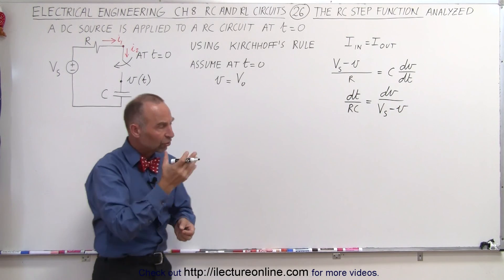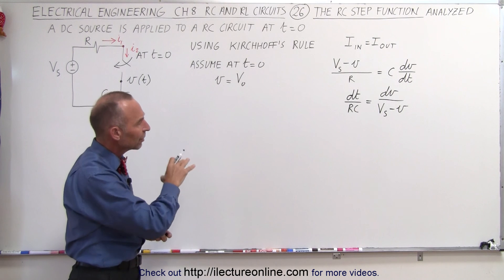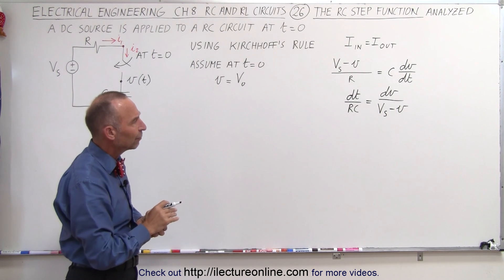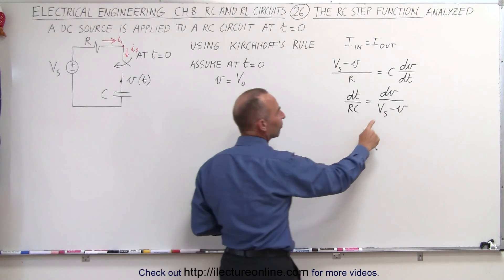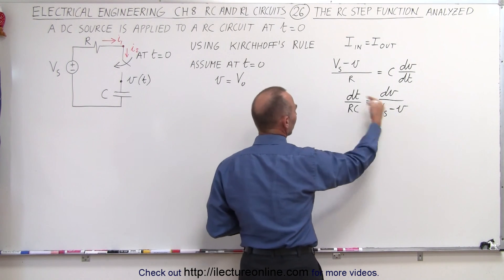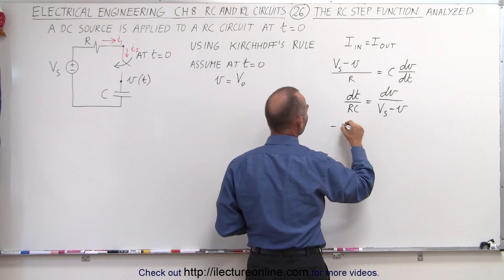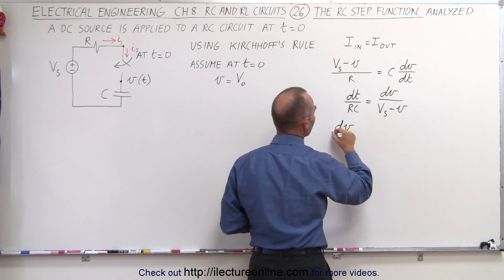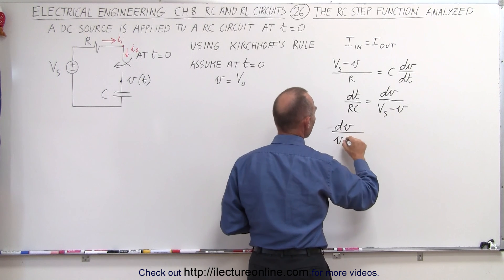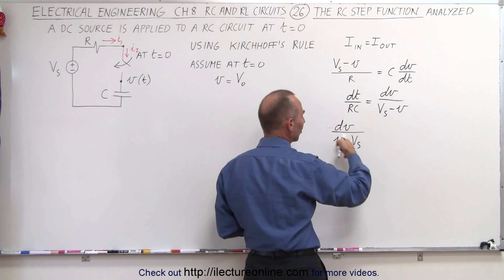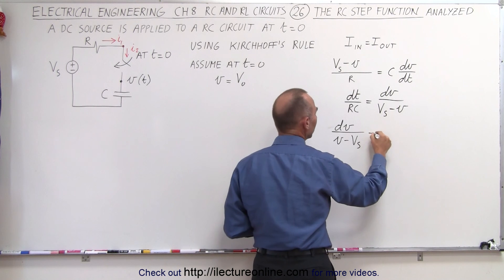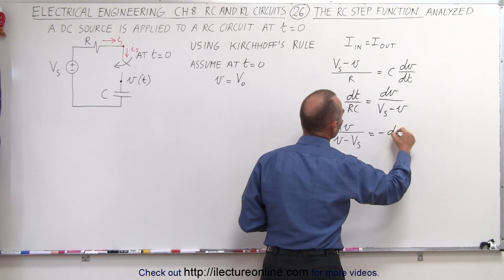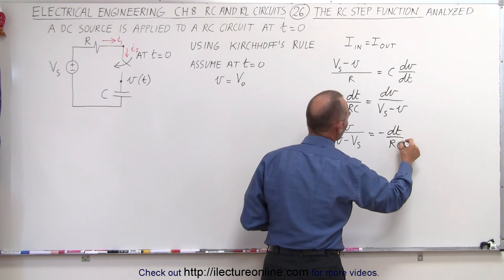Now we're going to switch the equation around — we want dV on the left side, and we're going to multiply both sides by negative one because we want to write this as V minus V_S. We'll write it as dV divided by V minus V_S, which is essentially multiplying by negative one, is equal to minus dt divided by RC.